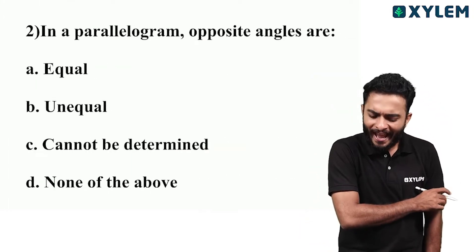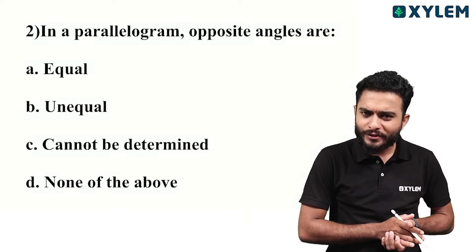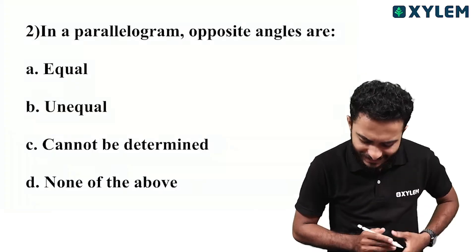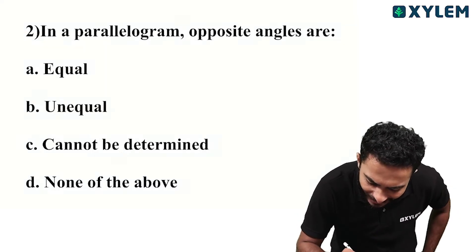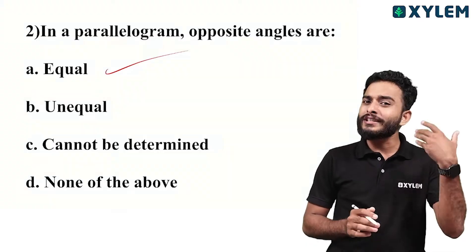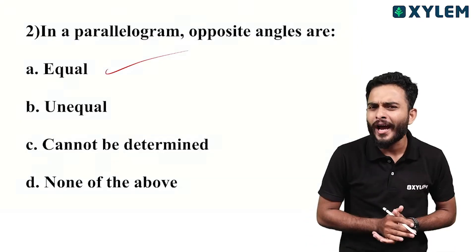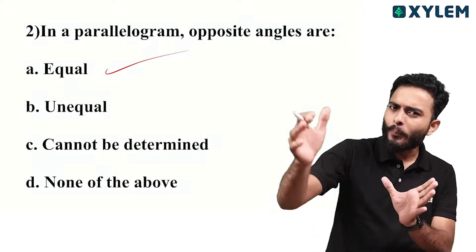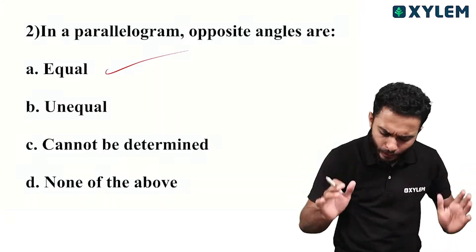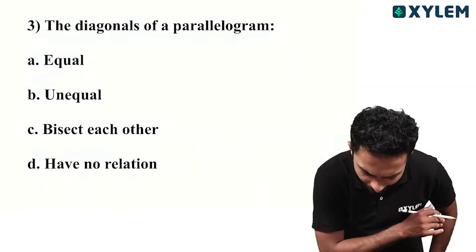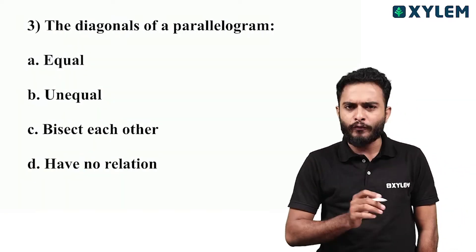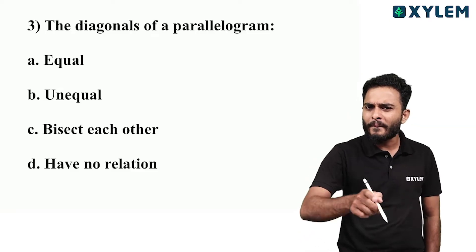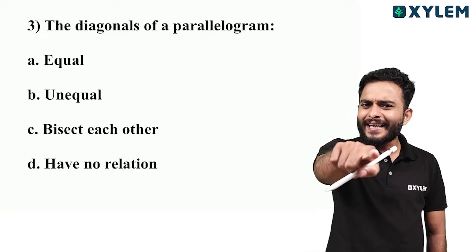This is the question. Parallelogram opposite angles are equal. The opposite angles are equal in a parallelogram. The diagonals of a parallelogram bisect each other.